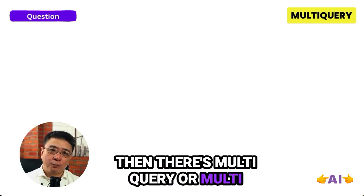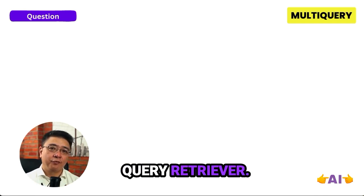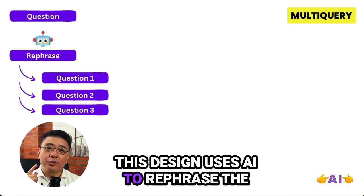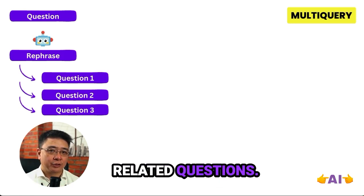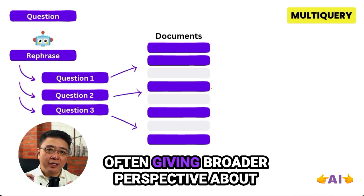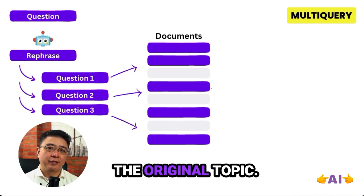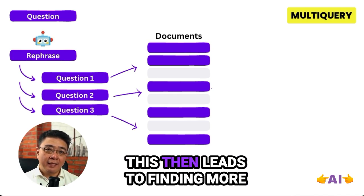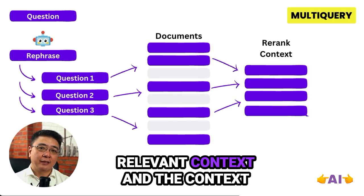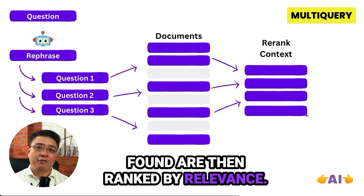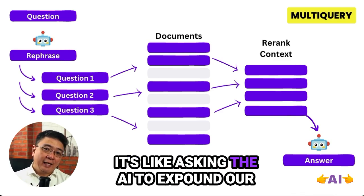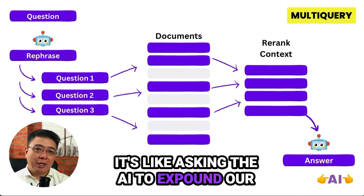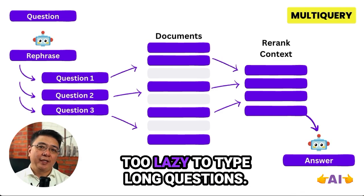Then there's multi-query or multi-query retriever. This design uses AI to rephrase the original question into multiple related questions, often giving a broader perspective about the original topic. This leads to finding more relevant contexts, which are then ranked by relevance, and then the answer is generated. It's like asking the AI to expound on our original question because we are too lazy to type long questions.